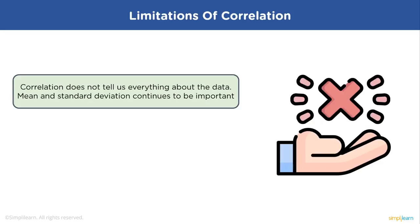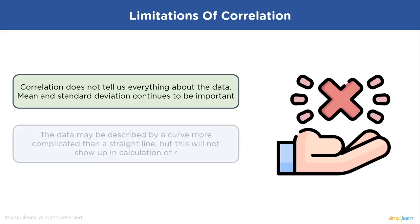There are also some limitations of correlation. The first one is correlation does not give you every insight on the data. Mean and standard deviation are still important parameters to get insight into data. The second one is the data will not produce a straight line every time, and it will be difficult to predict the value of r just with the straight line or the slope of the graph.